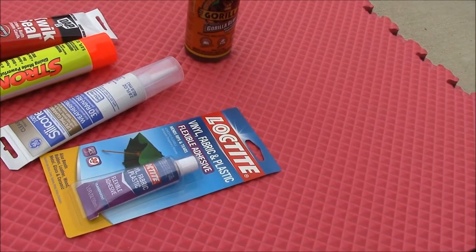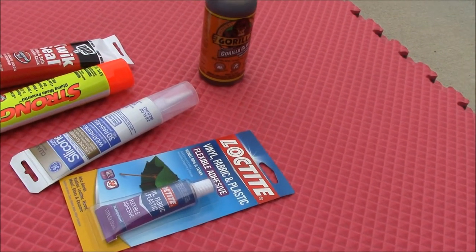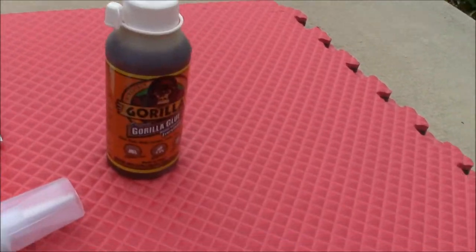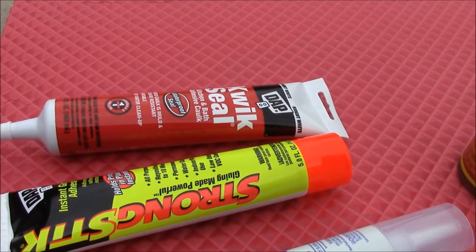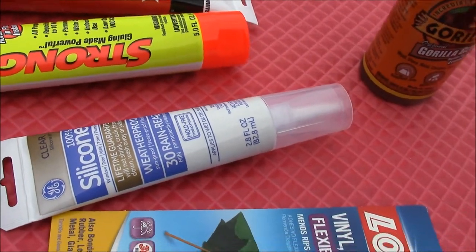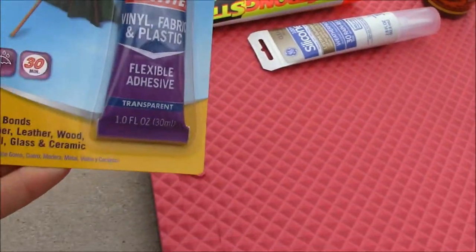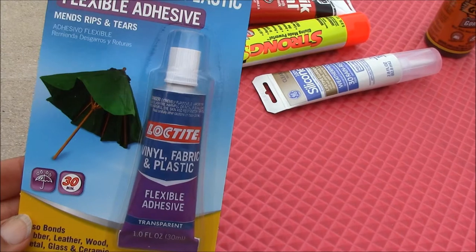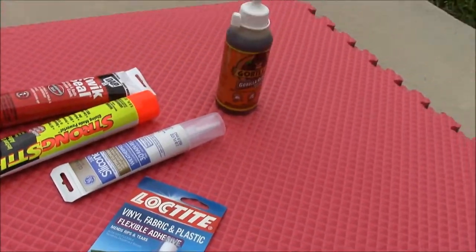I'm getting ready to glue these mats together and I asked for suggestions on the internet. Some people suggested Gorilla Glue, some suggested caulk. I also bought some silicone, and this says it's actually made for rubber. I'm not sure which is going to work, so I'm going to try all of them and see which one works best.